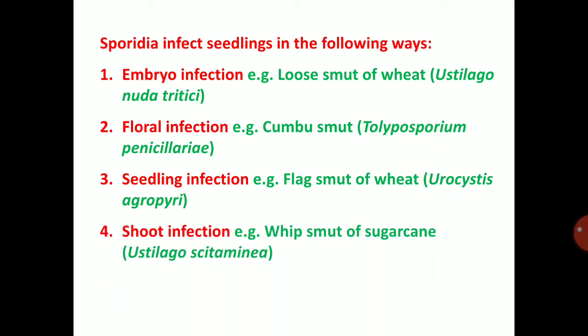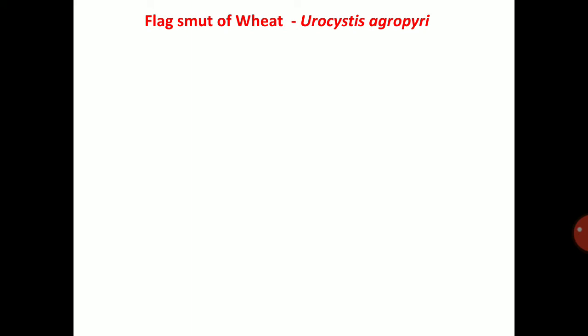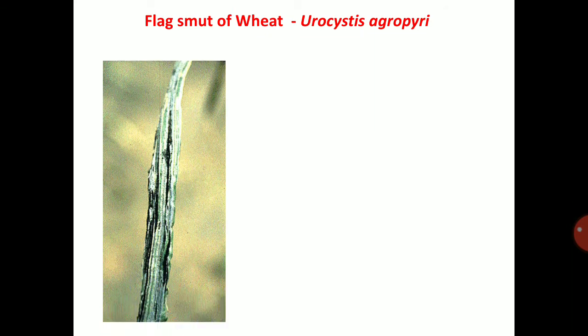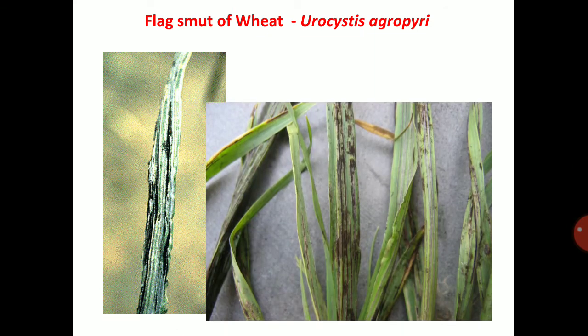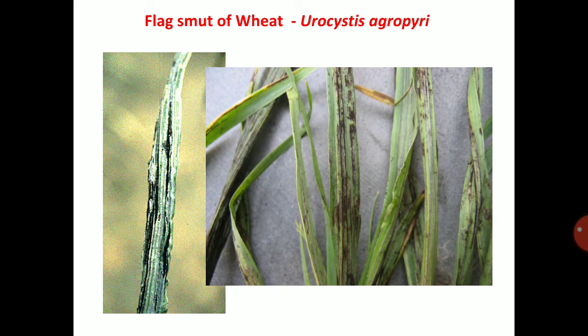Soot infection — example: whip smut of sugarcane, Ustilago scitaminea. Flag smut of wheat is caused by Urocystis agropyri, which mainly infects the seedlings. In flag smut, the infection is on the flag leaf, and black color spores are present there.